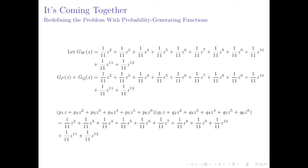We can now redefine our problem in terms of these generating functions. What we want to find is coefficients p1 through p6, and similarly q1 through q6, such that g_w of z equals (1/11)z² + (1/11)z³ + (1/11)z⁴ + (1/11)z⁵, up to (1/11)z¹². So this means g_p(z) times g_q(z) must equal that expression, meaning our two brackets must equal the (1/11)z² through z¹² expression.